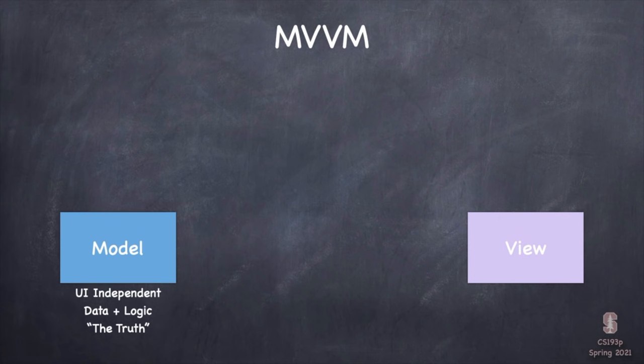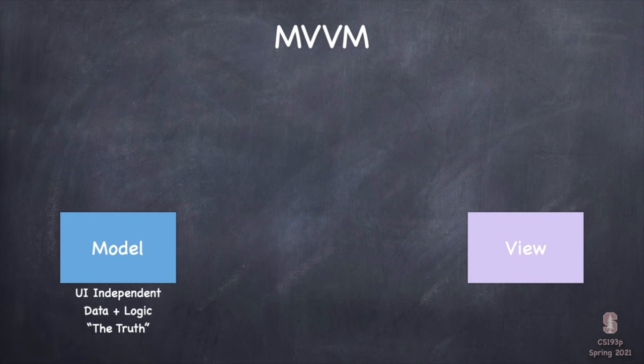The model is the single source of truth about the data that represents our game. We are never going to store that information anywhere else but in the model. We're never going to copy it into variables that live in our user interface code. We won't have an isFaceUp @State var in our view anymore. Instead, we're always going to ask the model if we need to know whether a card is face up, so we never have to worry about two versions of the truth.